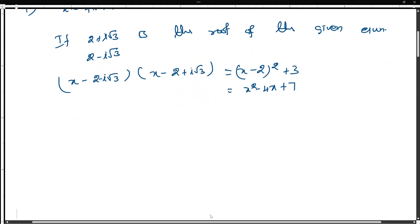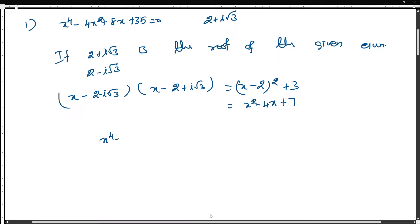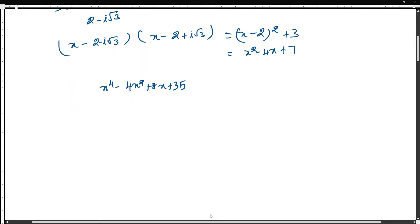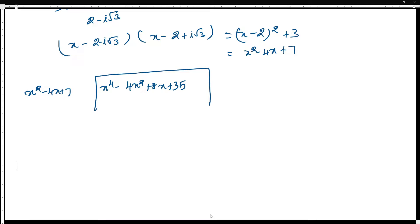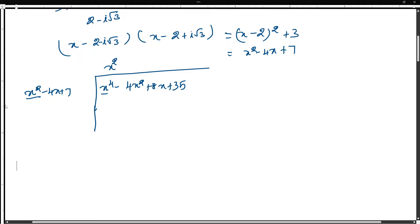So I am going to divide the equation x⁴ minus 4x² plus 8x plus 35 by x² minus 4x plus 7. Comparing the first elements, x² into x⁴, we write x² here. You can also write 0x³ to be clear.